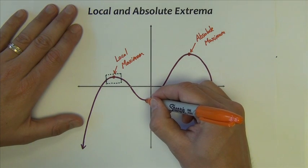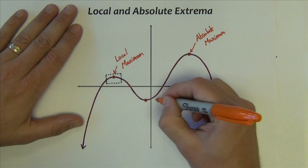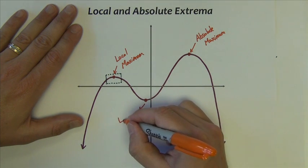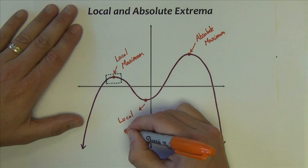Now we also have a point down here, in contrast, at the bottom of a hill. This is called a minimum, or in this case, it's a local minimum.